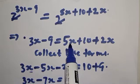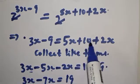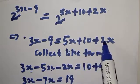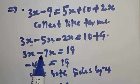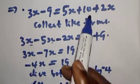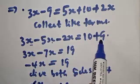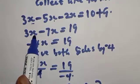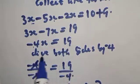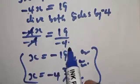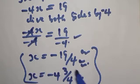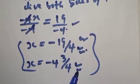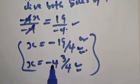Collecting like terms: 3x minus 5x minus 2x — since both 5x and 2x were positive and cross to the other side they become negative, giving 3x minus 7x equals minus 4x. Then minus 9 crosses to the other side and becomes plus 9, so we have minus 4x equals 19. Dividing both sides by minus 4, x equals minus 19 over 4, which is our final answer.